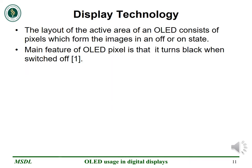The main feature of an organic LED pixel is that it is an emissive device which can be switched off and be completely black, whereas a liquid crystal pixel is a transmissive device which does not allow complete coverage of the backlight.